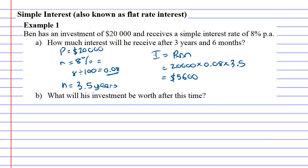All right, now question B is going on and says: what will his investment be worth after this time? And all you've got to do is use a bit of common sense and go, all right, well if he's invested $20,000 and he's also made another $5,600, then altogether his investment is worth